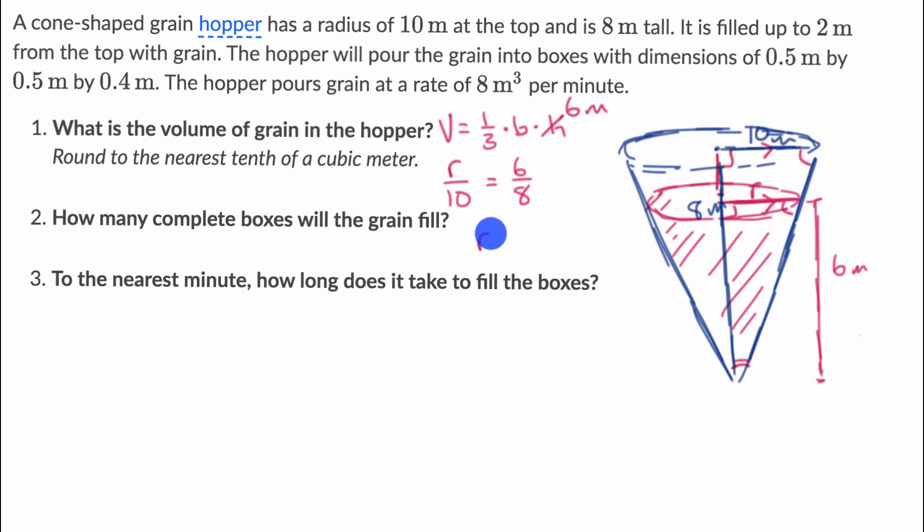R is going to be equal to—R is equal to multiply both sides by 10, divide both sides by 10, and you're going to get 60 over eight. 60 over eight, eight goes into 60 seven times with four left over. So it's seven and four eighths, or it's also 7.5.